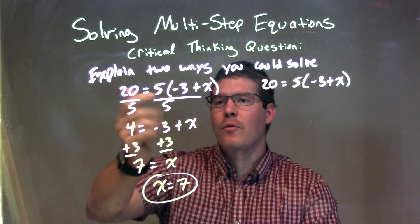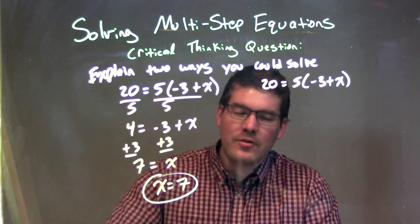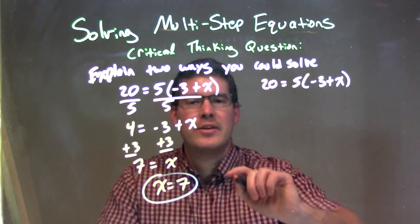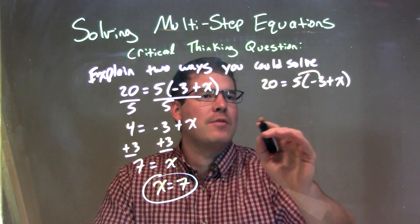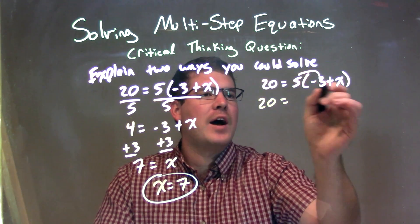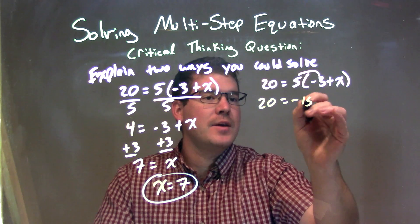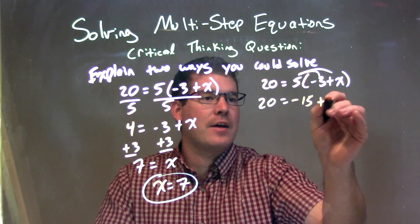Alright? So when I divided first by 5 to both sides, I got the final answer of x = 7. Let's try distributing. If I distribute the 5 across, we have 20 right here, 5 times -3 is -15, and 5 times x is 5x.